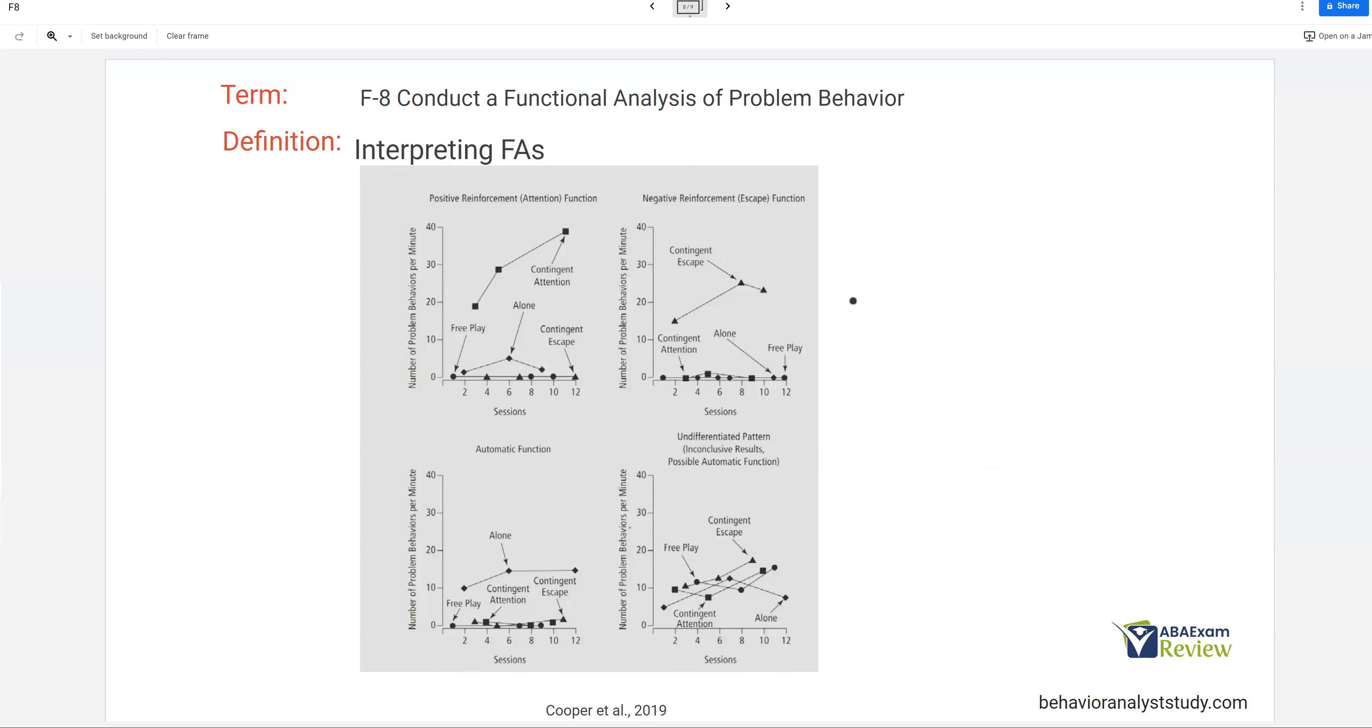And to wrap it all up, how are we going to interpret this? Because remember, we do everything systematically, and we take data, and we analyze data. And so, you want to interpret your data like you would anything else. We're data-driven, right? So, let's look at our first graph here, where the assumed function is attention. And how do we draw that conclusion? Well, you can see number of problem behaviors per minute is 20, 30, and 40 in the contingent attention condition. So, how do we run that condition? We withheld attention, and then when behavior occurred, we gave attention. And so, in that condition, behavior occurred the most. You can see down here, during control and escape and alone, we didn't get much behavior.